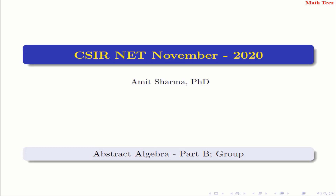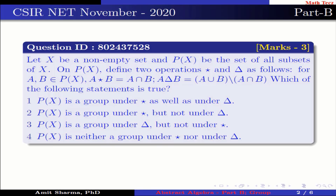Without delay, let's start. The question is: let X be a non-empty set and P(X) be the set of all subsets of X. On P(X), define two operations star and delta as follows: for A, B belonging to P(X), A star B equals A intersection B, and A delta B equals A union B excluding A intersection B.